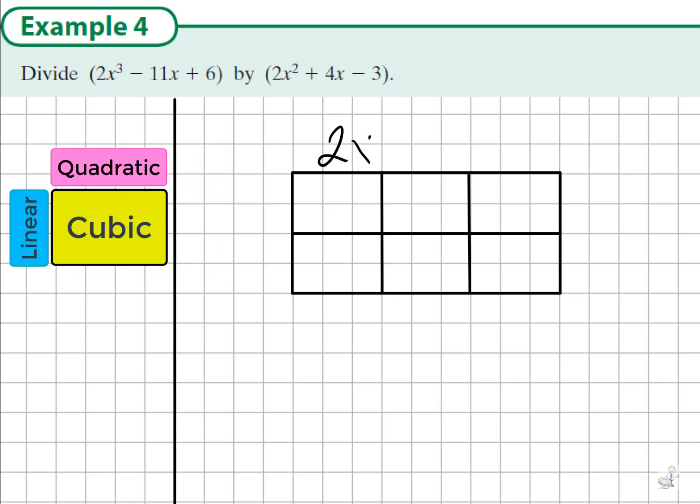So first let's place the quadratic in position. So we write 2x squared plus 4x minus 3. Now because we've multiplied a few cubic expressions before, we know where the x cubed term goes and where the constant term, the 6, goes.